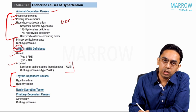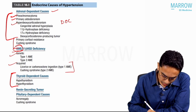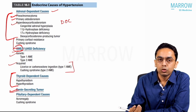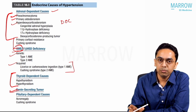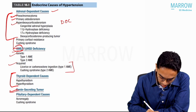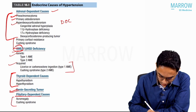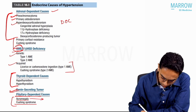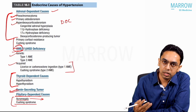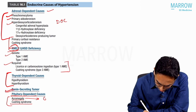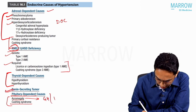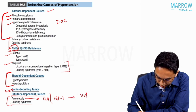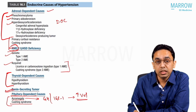Renin-secreting tumor obviously increases renin and aldosterone, causing hyperaldosteronism in a hyperreninemic state. Pituitary-dependent causes include Cushing's and acromegaly. In acromegaly, there is an increase in GH and IGF-1 — understanding the mechanism helps remember these things better.